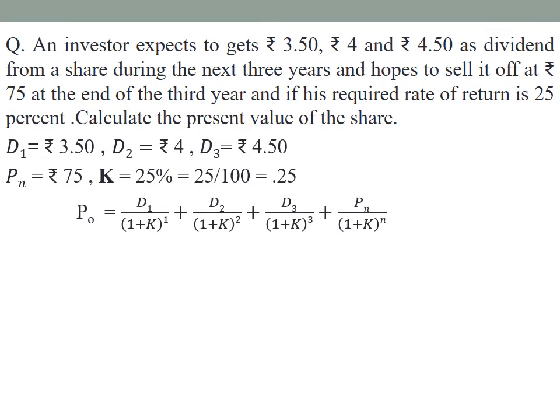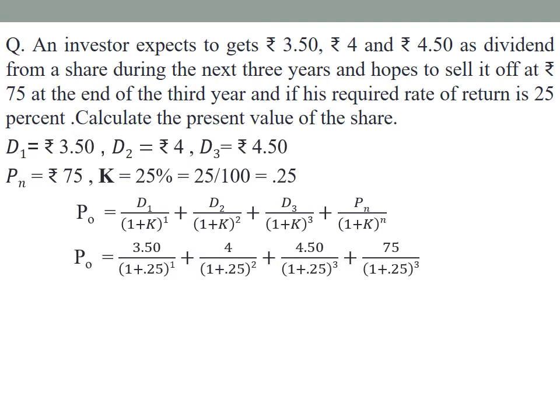P0 is equal to D1 divided by (1 plus K) raised to 1, plus D2 divided by (1 plus K) raised to 2, plus D3 divided by (1 plus K) raised to 3, plus Pn divided by (1 plus K) raised to n. Substituting values: P0 equals 3.50 divided by (1 plus 0.25) raised to 1, plus 4 divided by (1 plus 0.25) raised to 2, plus 4.50 divided by (1 plus 0.25) raised to 3, plus 75 divided by (1 plus 0.25) raised to 3.